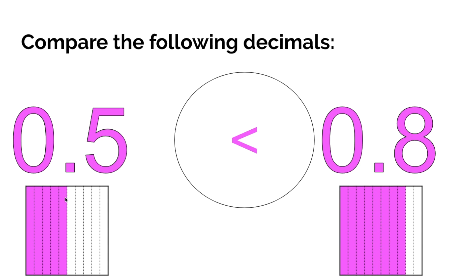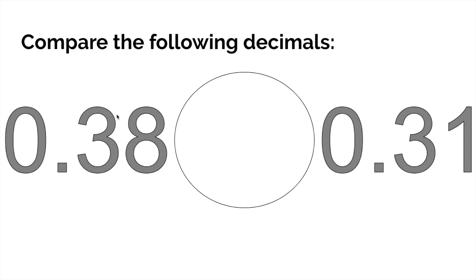Because this is one, two, three, four, five tenths—five out of ten—and this is eight out of ten, eight tenths. So it's pretty clear why eight tenths is greater. What about this one?